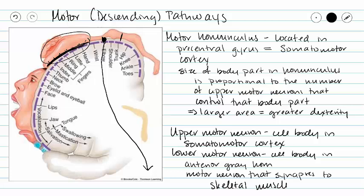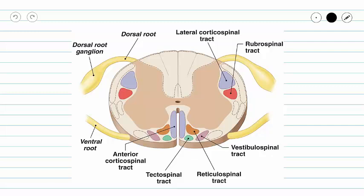In previous lectures, we've talked about motor neurons in our motor units. The motor neuron in our motor unit is a lower motor neuron. Here we see a picture of our spinal cord. Our anterior gray horn is going to be this region here, and this does somatic motor. So the cell bodies of our lower motor neurons are in our anterior gray horn, and then we send our axons over our ventral root to our spinal nerve to be distributed to our skeletal muscles.